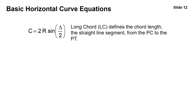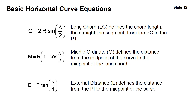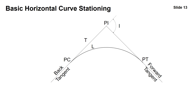The long chord C defines the straight line segment from the PC to the PT, where C equals 2 times the radius times the sine of delta divided by 2. The middle ordinate equals the radius times 1 minus the cosine of delta divided by 2. The external distance E equals the tangent length times the tangent of delta divided by 4. For stationing, the PC equals PI minus T, and the PT equals the PC plus L — you subtract the tangent length from the PI to get the PC, then add the arc length to get the PT.